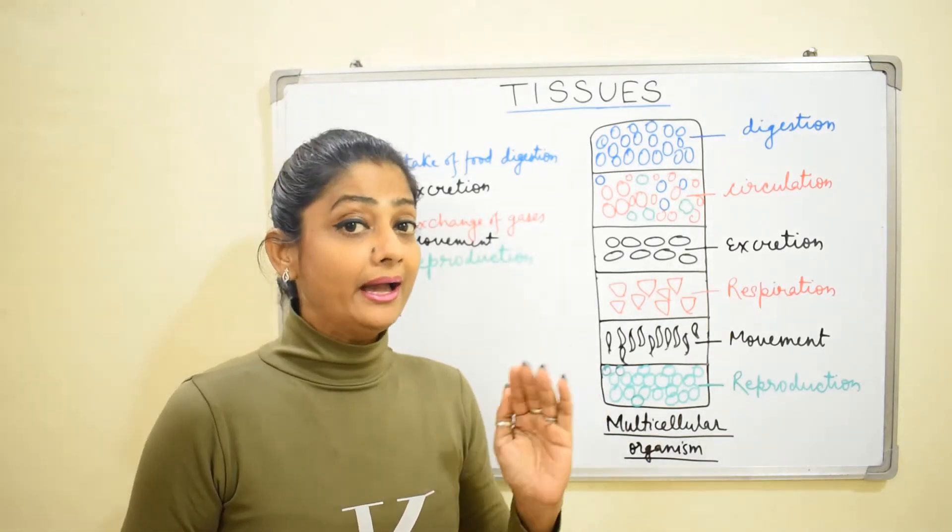Then some other cells form groups and work for circulation. In each group, cells create a team and work together to achieve a particular function. These groups of cells working toward the same function are called tissue.